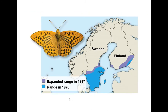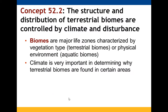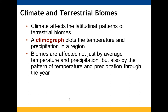A butterfly's range expanded from 1970 to 1997, illustrating how climate change shifts species distributions. Terrestrial biomes are identified by both their climate and disturbance history. Biomes are life zones recognized by their vegetation type or environment. Climate plays a key role in determining why certain biomes occur in specific areas of our planet, including latitudinal patterns. A climograph plots temperature versus precipitation in a region to help characterize biomes.